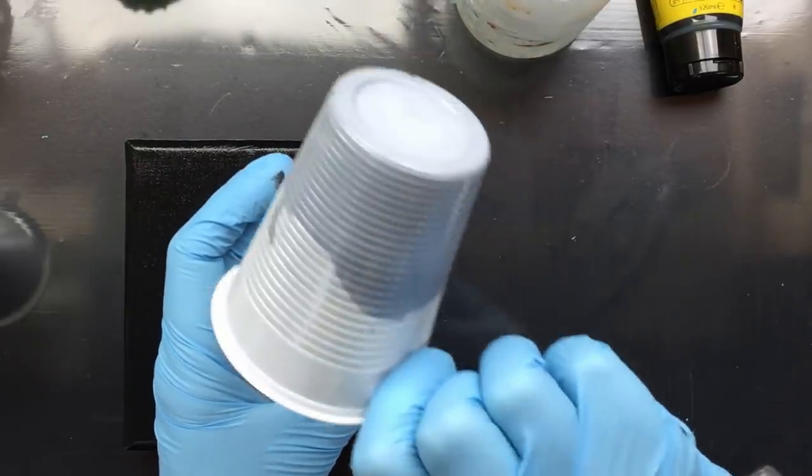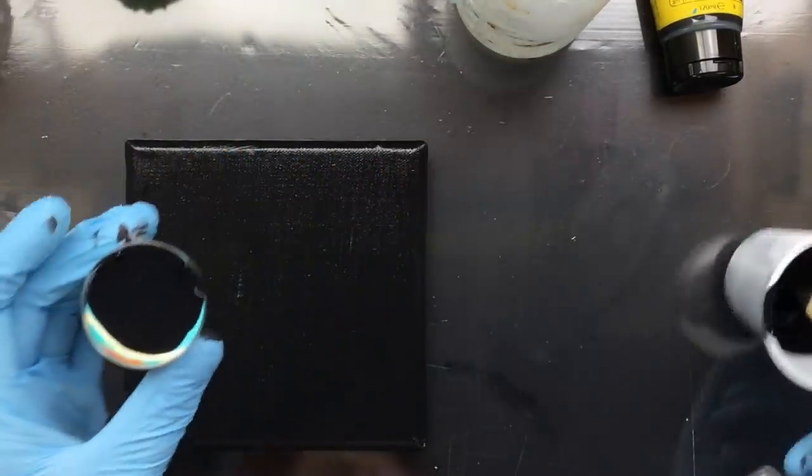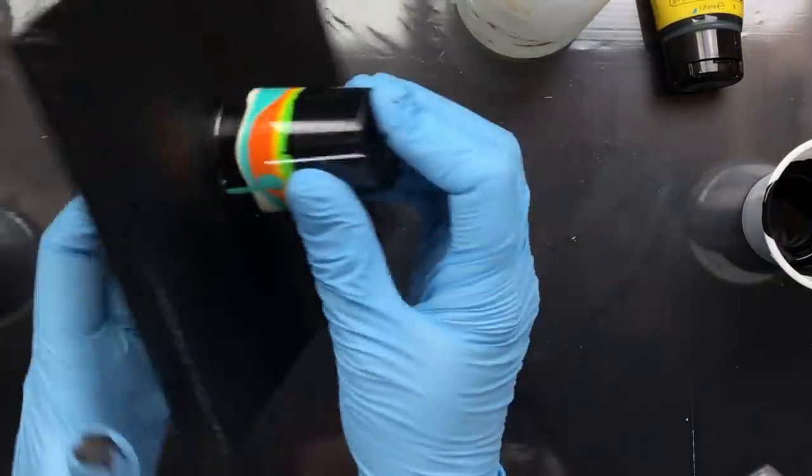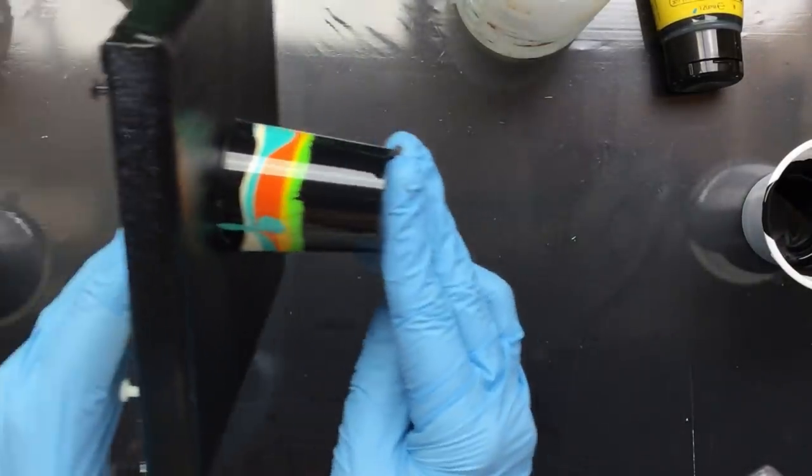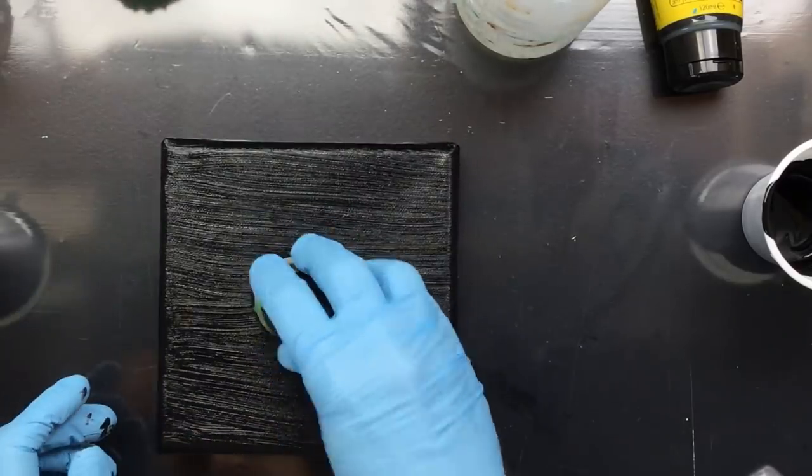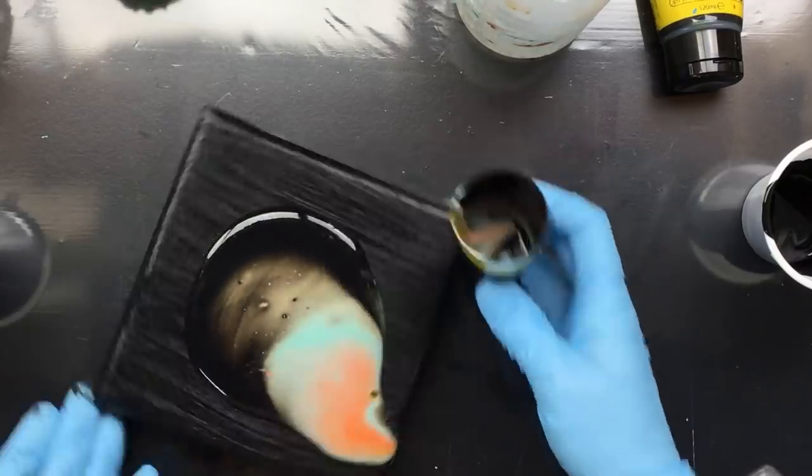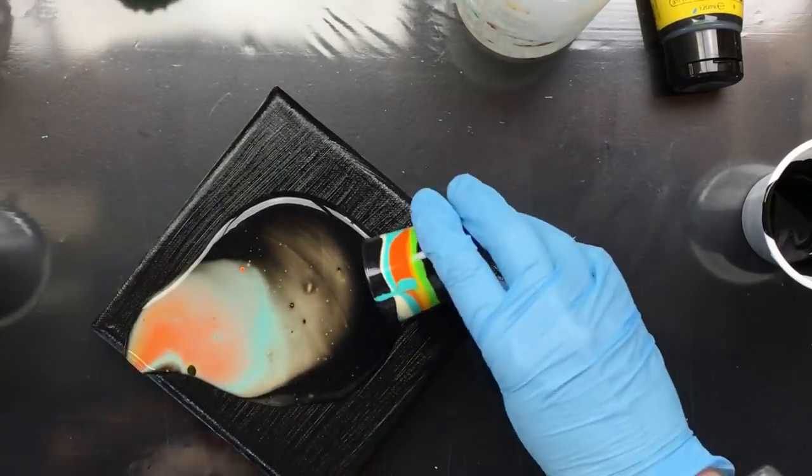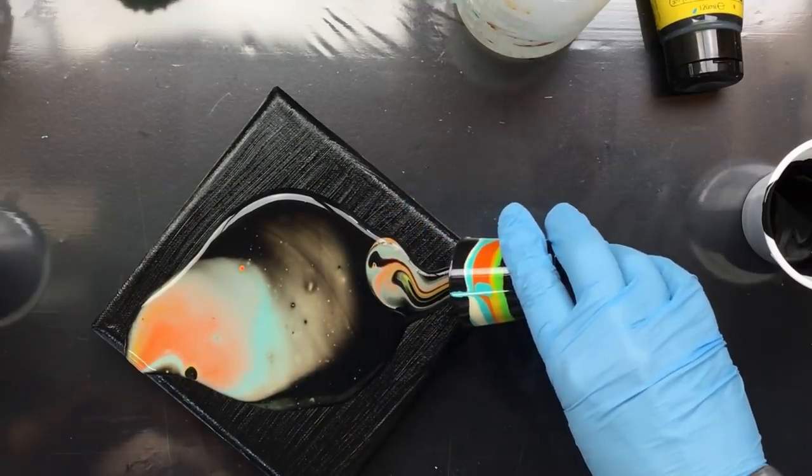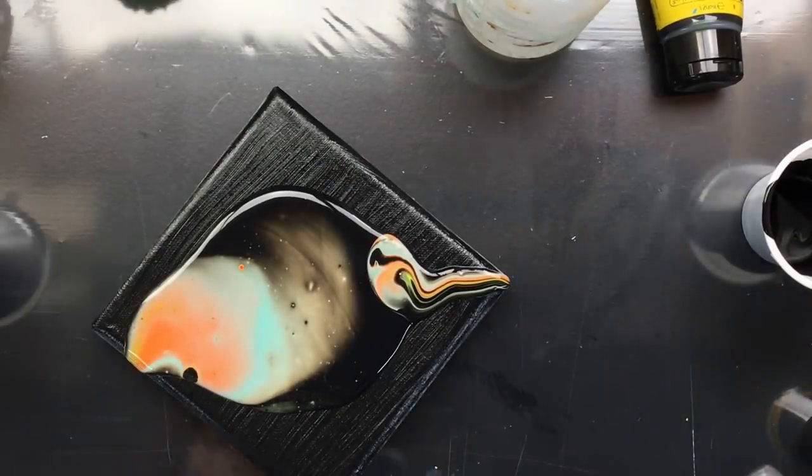And then we're going to finish it off with black. Now that's a lot of paint. I think that'll work. There it is. So we're going to do this like this, because it's easier. Look at those nice colors. Okay, now we're going to pick it up. Sorry about that noise. I know some people really hate that noise.